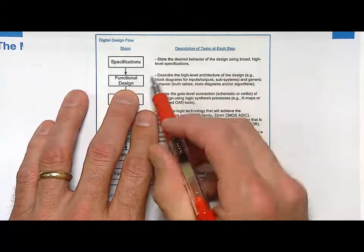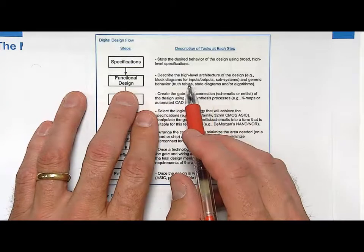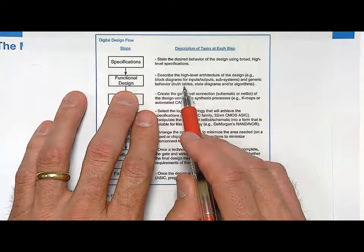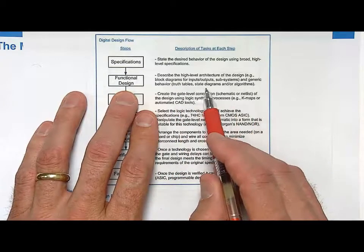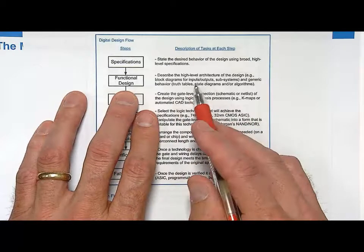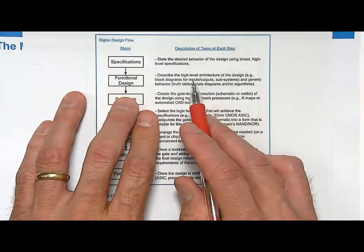Then you go to the functional design and this is the high-level architecture. This is where you start doing block diagrams and you describe the behavior. This is where you would have truth tables and algorithmic diagrams and state diagrams, register transfer level diagrams of how is the system, what is it really supposed to do? What is the specification of its behavior?